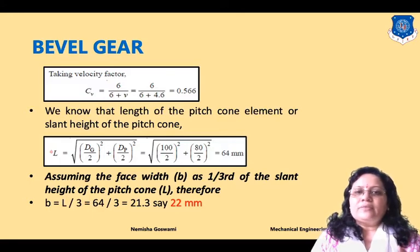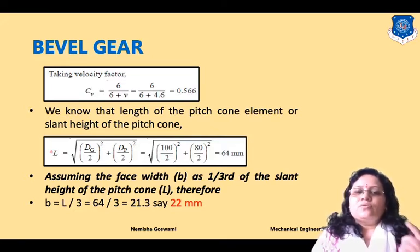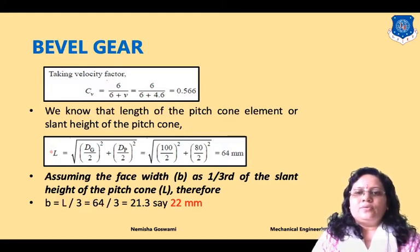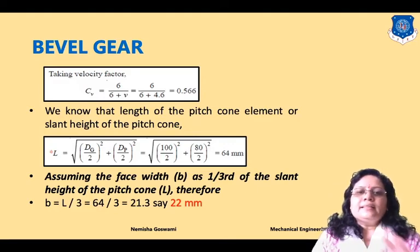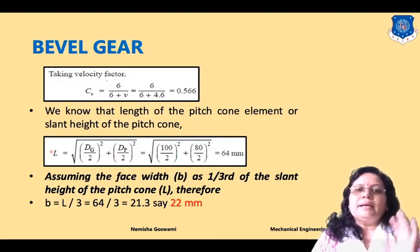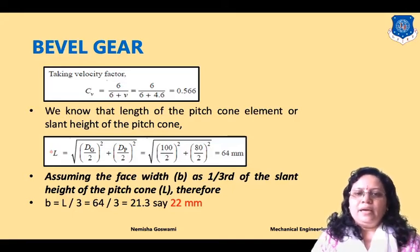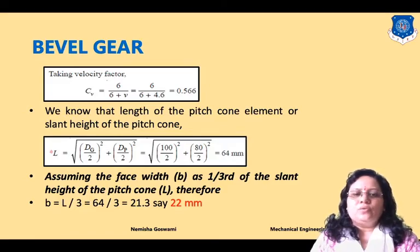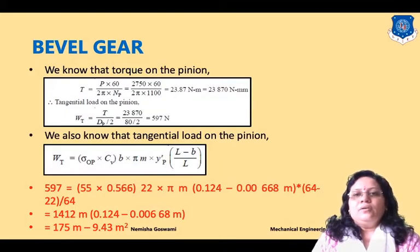Now we find the bevel factor. We need slant height L: L = √((dg/2)² + (dp/2)²) = √(50² + 40²) = 64 mm. Since face width is not given, we take b = L/3 = 64/3 ≈ 21.3 mm, approximated to b = 22 mm.